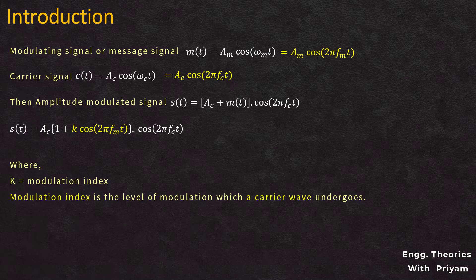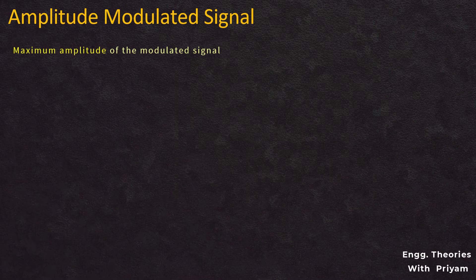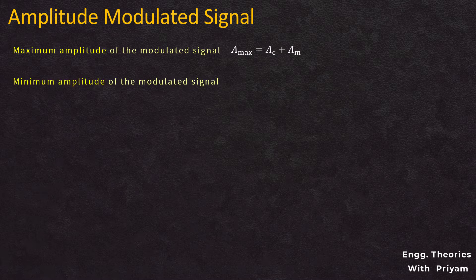The modulation index is the level of modulation which a carrier undergoes during modulation. It can be written as k = am / ac. The maximum amplitude of the modulated signal is A_max = ac + am, and the minimum amplitude is A_min = ac − am.